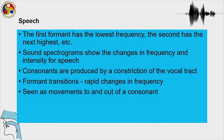The first formant has the lowest frequency, then the second and so on — there are many formants whenever there is some fundamental frequency. Sound spectrograms show the changes in frequency and intensity for speech. Consonants are produced by constriction at any part of the vocal tract, and formant changes — rapid changes in frequency — are seen as movements into and out of a consonant. This is the acoustic aspect which we studied in unit 2.